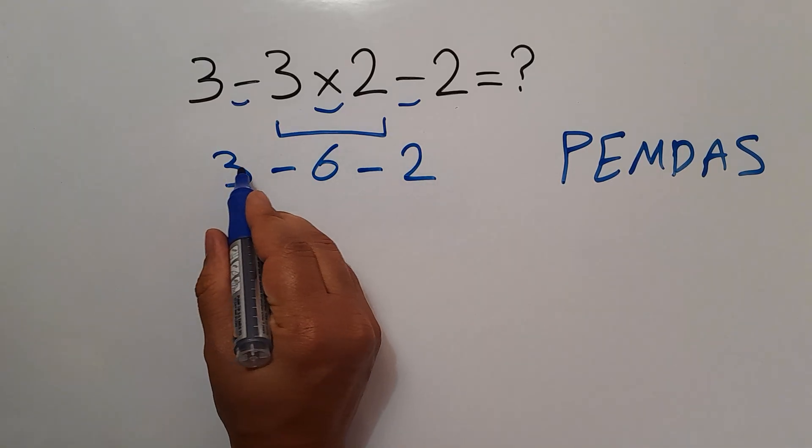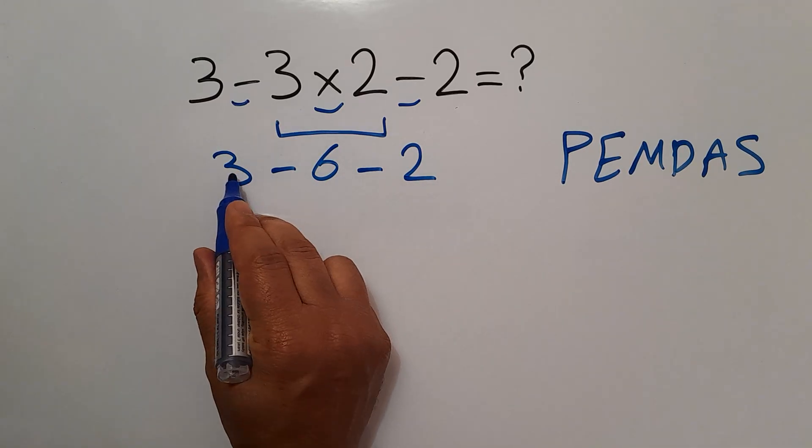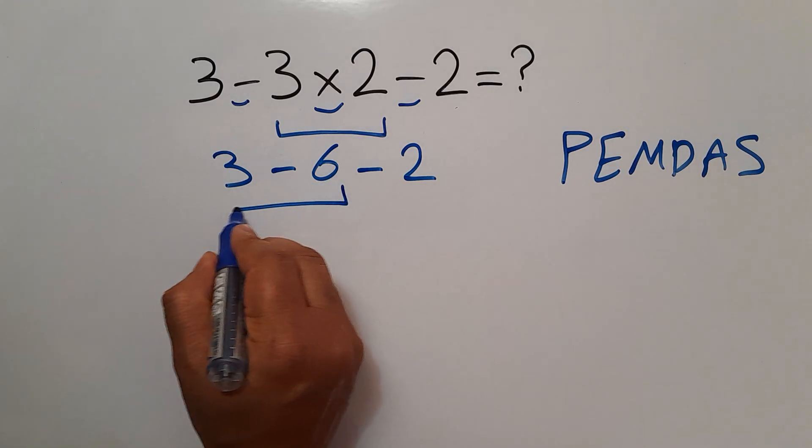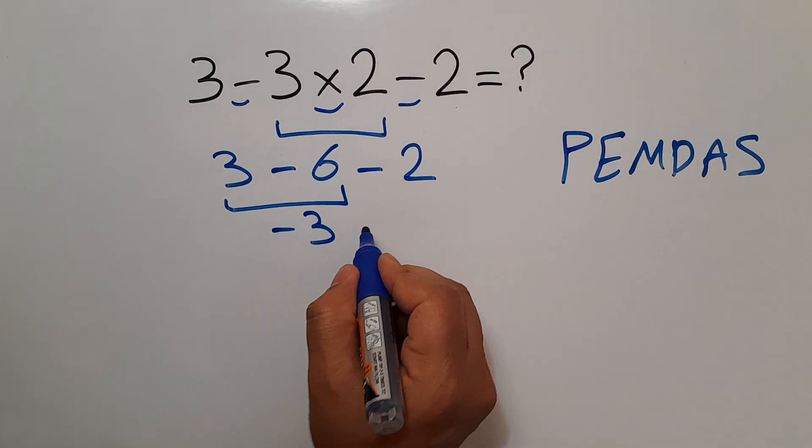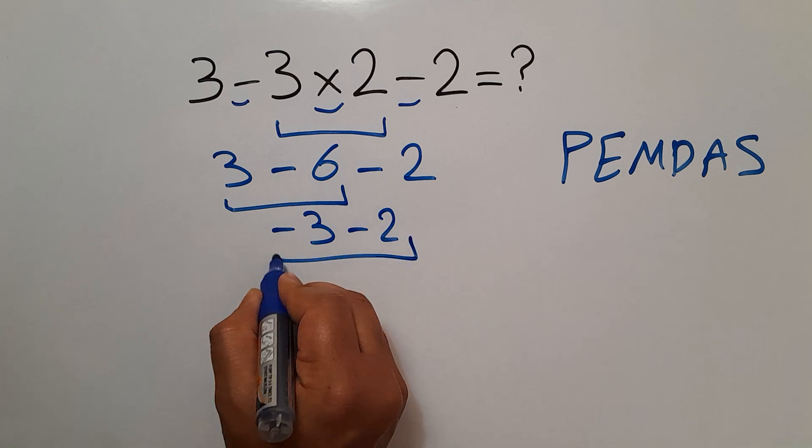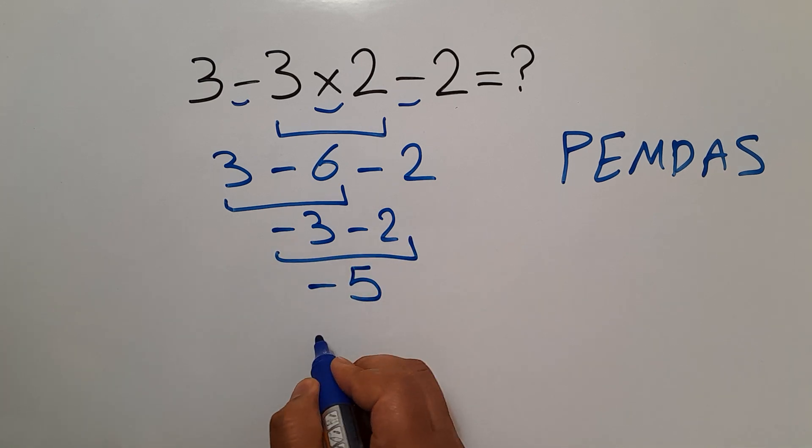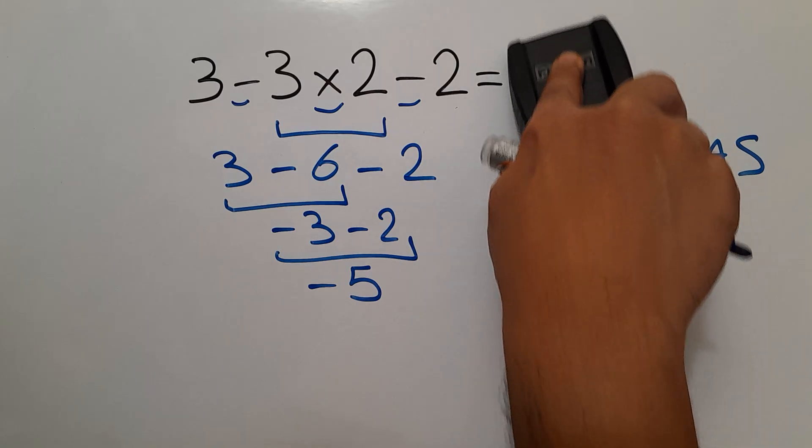Here, we work from left to right. So, 3 minus 6 gives us negative 3, and negative 3 minus 2 gives us negative 5. So, our final answer to this problem is negative 5.